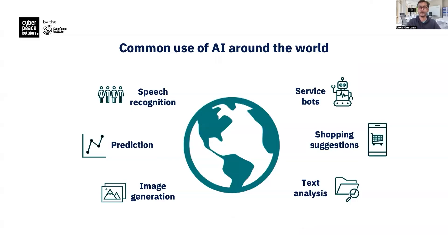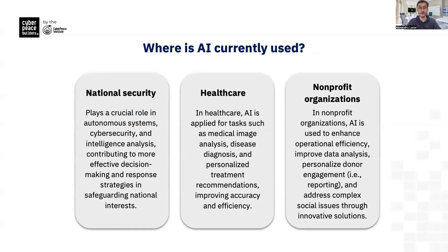Now, how cool is that? AI is nowadays used all around the world — in terms of predicting the weather, generating images for marketing purposes, providing shopping suggestions, or using AI to conduct textual analysis. It starts to permeate all aspects of society. For example, in national security, it helps with intelligence analysis, which can actually help decision makers make better and faster decisions to counter national security threats.